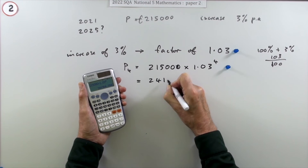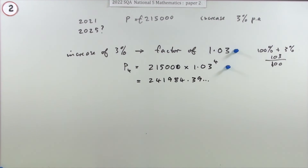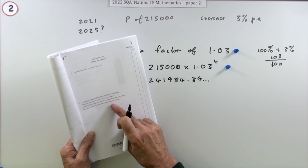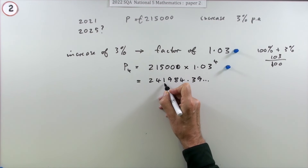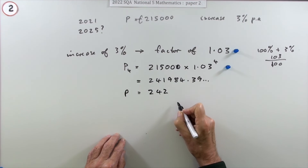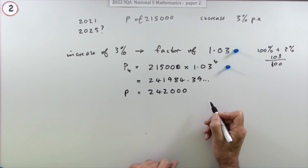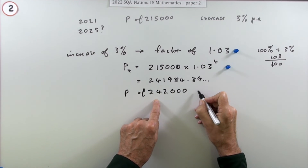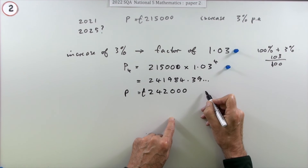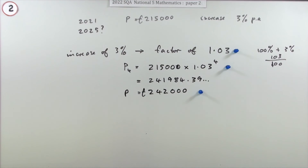Now just press the buttons: type in the required calculation, press equals, and write down the answer — first of all 241,984.39 and so on. Then check how you need to give the answer: it says to the nearest thousand pounds. So looking at the thousands column, the digit after it is 9, so we round up to 242,000. You shouldn't put £242,000.00 because that makes it look like it's to the nearest penny, but the marking scheme says they'll still accept it. The final mark is for the correctly rounded answer.